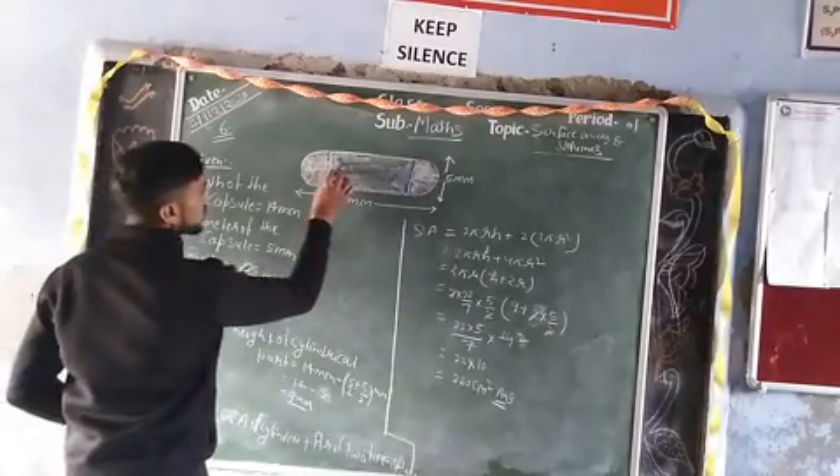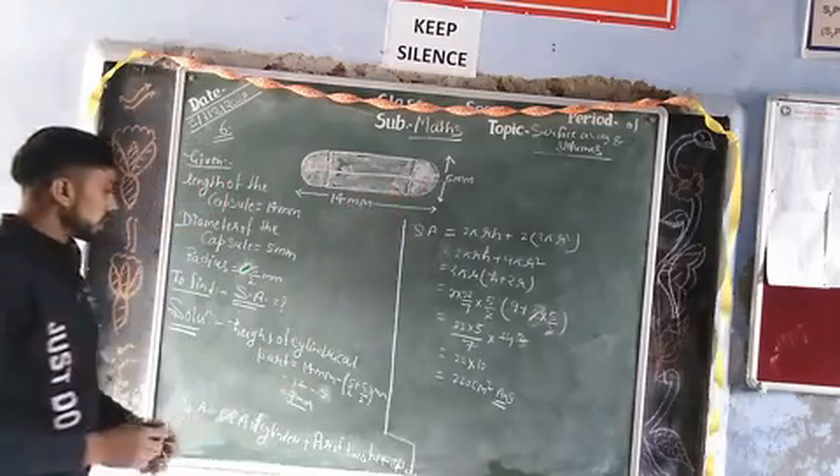This is the height of the cylindrical part, here and here. How did we get it? 14 mm entire length minus radius of hemisphere, this and this: 5 upon 2 and 5 upon 2. So we get 9 mm height.